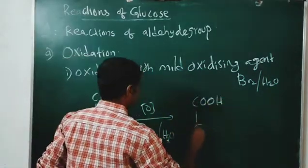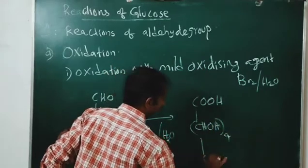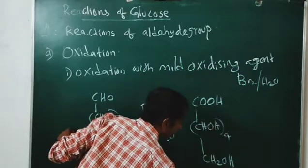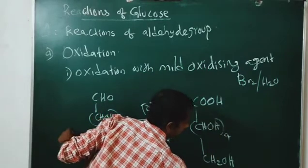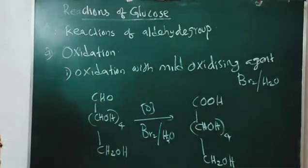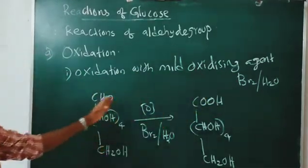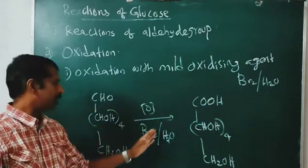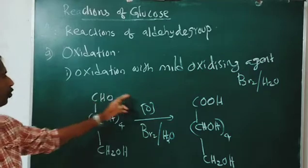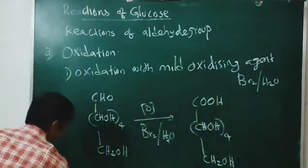So we get COOH, CHOH four times, CH2OH. This acid is known as gluconic acid. So this is oxidation with the mild oxidizing agent like bromine water — when glucose is oxidized, only the CHO group will be converted to COOH and we get gluconic acid.